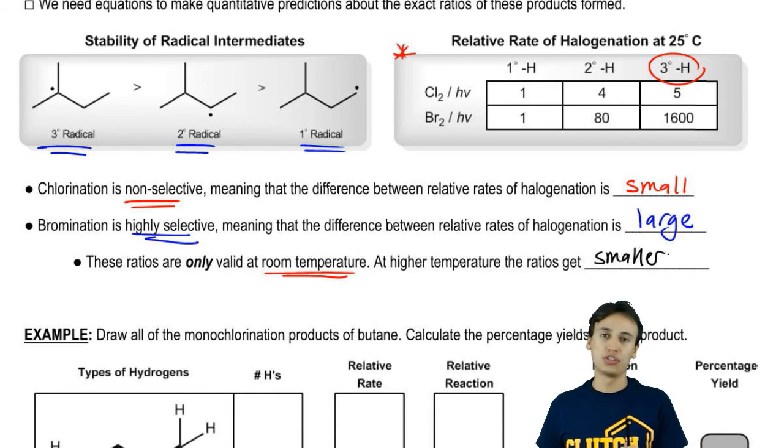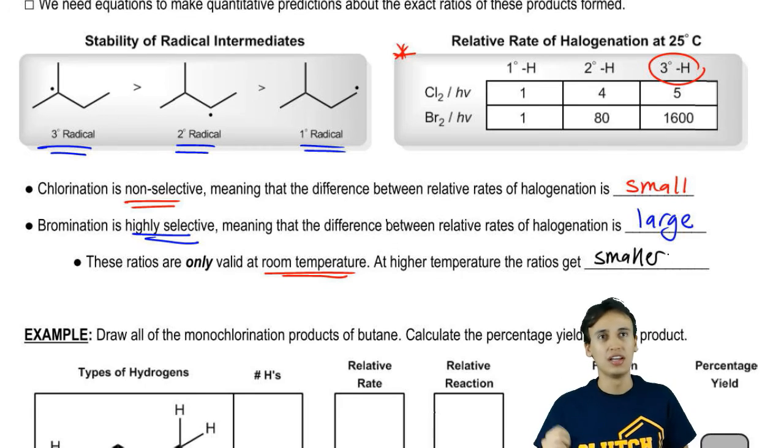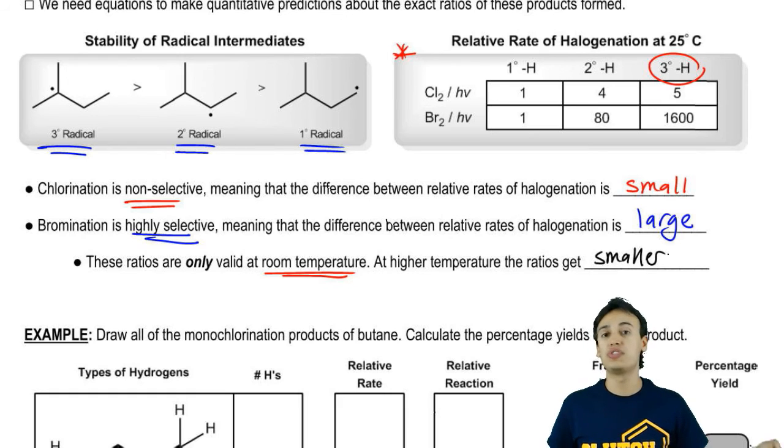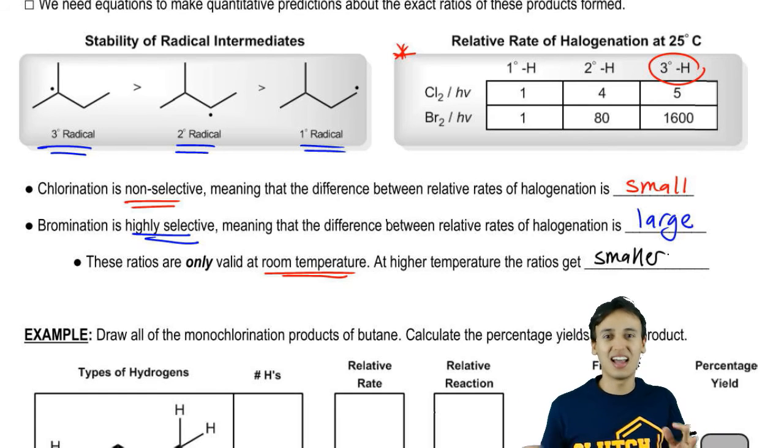One note of caution for you guys, you might be flipping through a textbook and you might see slightly different values here. You might see it says 1 and then 4.2 and 5.5. I don't really care about the details. The reason I chose these numbers is because these are the safest, roundest numbers that I could find from a combination of sources. I looked online, I looked through a few different textbooks and these numbers just seem to make the most sense. There's no point in teaching you with complicated numbers.